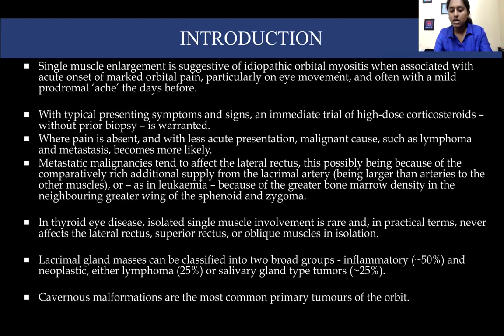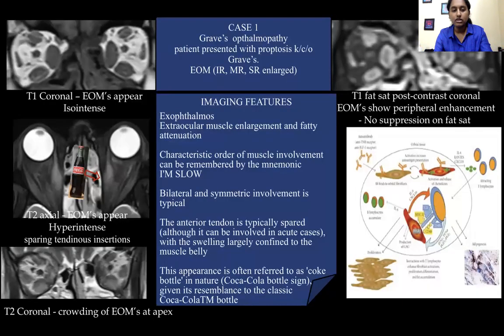My first case is a patient with Graves ophthalmopathy. The patient presented with proptosis and is a known case of Graves disease. On imaging, we can see enlargement of the extraocular muscles — the inferior rectus, medial rectus, and superior rectus — with bilateral symmetrical enlargement of these muscles.